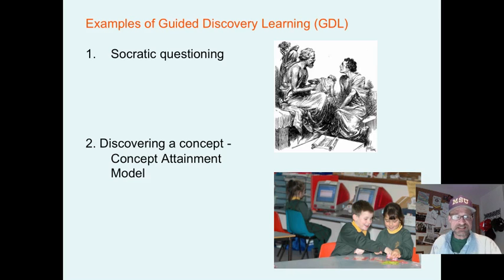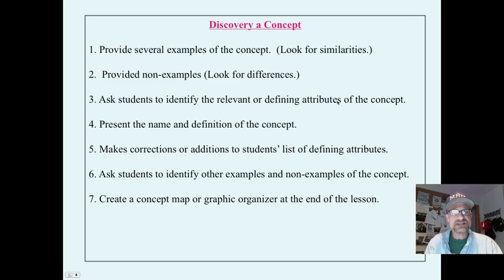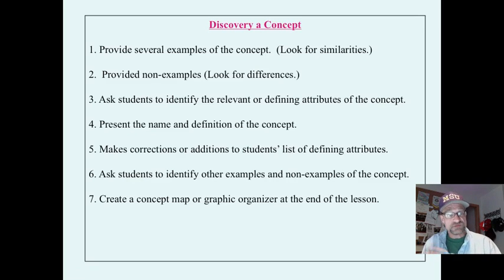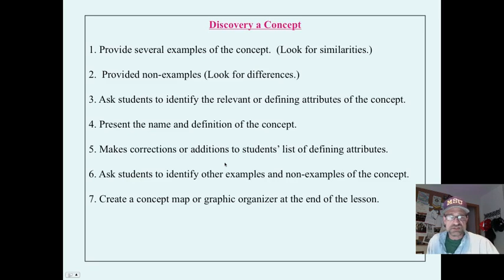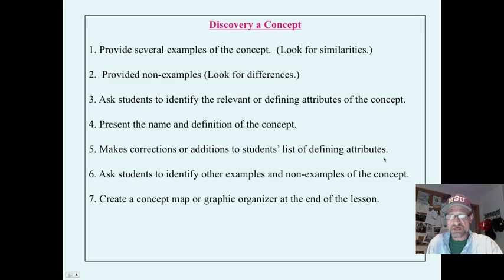The second type of guided discovery is discovering a concept, or the concept attainment model. Here is a general overview: provide several examples of the concept, provide non-examples and look for differences, then ask students to identify the relevant or defining attributes of the concept — for example, 'These are triangles, what do you see that they have in common?' Then present information: the name and definition of the concept, and make corrections or additions to students' list of defining attributes.